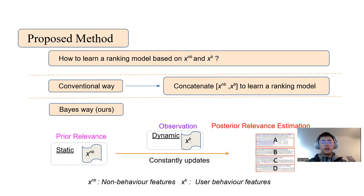Unlike the conventional Learning to Rank method, which usually concatenates behavior features and non-behavior features together to learn a ranking model, in this paper we choose to view it in a Bayes way.